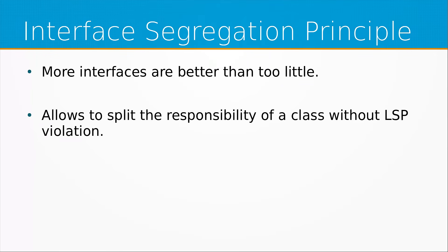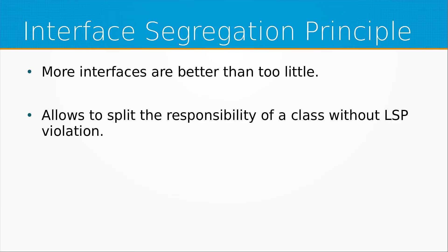We get to the next principle: the Interface Segregation principle. Basically what it means is that it's better to have many interfaces than too few. This is related to the previous principles we talked about, especially Liskov Substitution and Single Responsibility. If a class does too much because the interface is forcing it to, replacing it with another class would be harder and you might end up having to implement methods that don't make sense for your case — like the electric vehicle example we saw before.